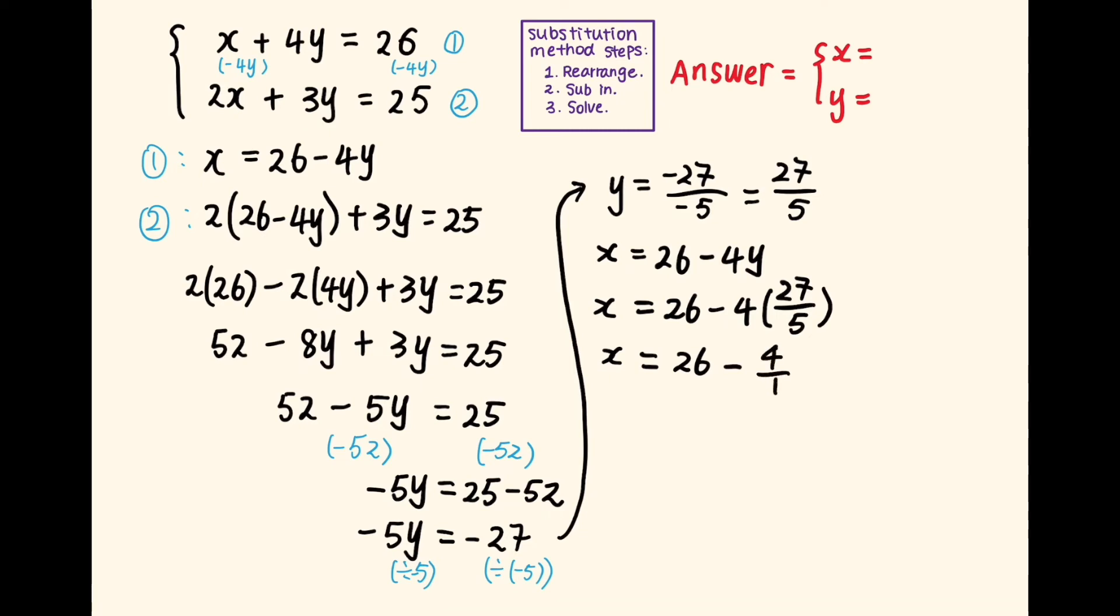4 can be written as 4 over 1 and times 27 over 5. When multiplying fractions, we can multiply the numerators and denominators together respectively. So the fraction part becomes 4 times 27, which is 108. 1 times 5 is simply 5. So x is equal to 26 minus 108 over 5.